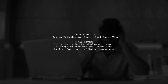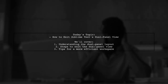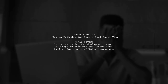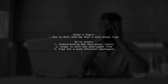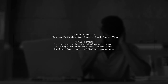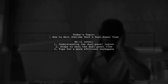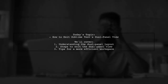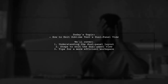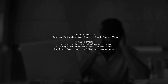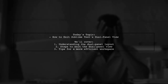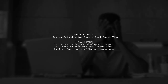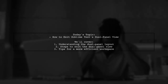Welcome to our Tech Tips video. Today we're addressing a question that many Sublime Text users encounter. Our viewer is curious about how to exit the dual panel view in Sublime Text 3. They mention that their editor displays two panels, with the left side remaining empty even when multiple files are opened on the right. Let's dive into this common issue and explore how to streamline your workspace.